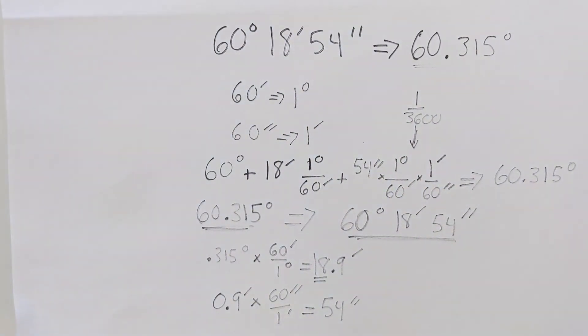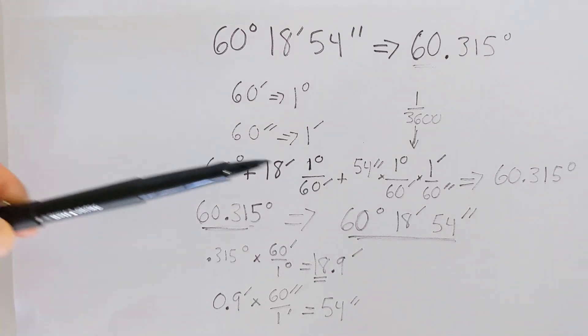So again, this shows us how to go from degrees, minutes, seconds to decimal degrees and back. Again, your calculator probably has a function to perform this, but in case you want to see how it's derived, or if you want to do it manually, you can use this process. Again, the important relationships are 60 minutes in one degree and 60 seconds in one minute.